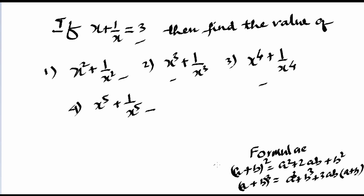The formulas we will use here — you should know that (a + b)² = a² + 2ab + b², and (a + b)³ = a³ + b³ + 3ab(a + b). By default you should know these two formulas. So we will see how to solve these questions.